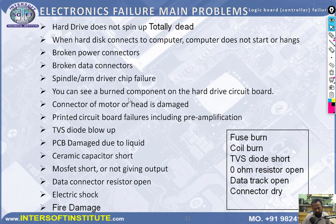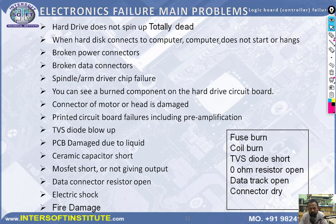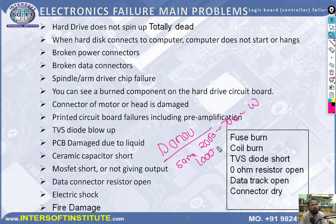Electronic failure symptoms include: hard disk not spinning at all (totally dead), computer not starting or hanging when hard disk is connected, broken power connection, broken data connection, spindle or arm failure, burned components, motor or head damage, printed circuit board failure, TVS diode blown, and PCB damage. If you open the PCB, you may find fuse burn, coil burn, TVS diode burn, zero-ohm resistance open, data track problems. If we cannot repair the firmware on the PCB, we need to buy a donor PCB of the same model number — same brand — such as the WD or Seagate board number.